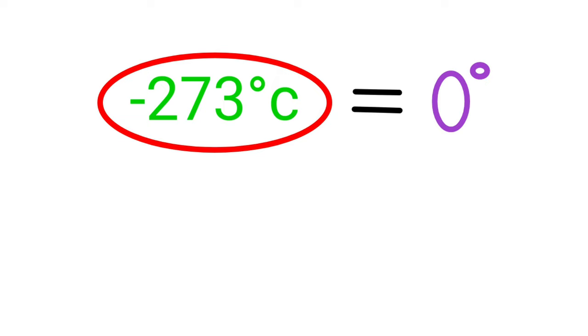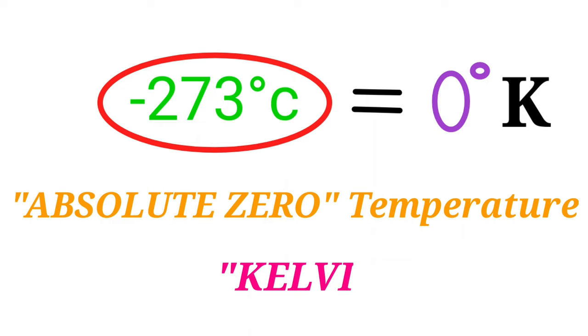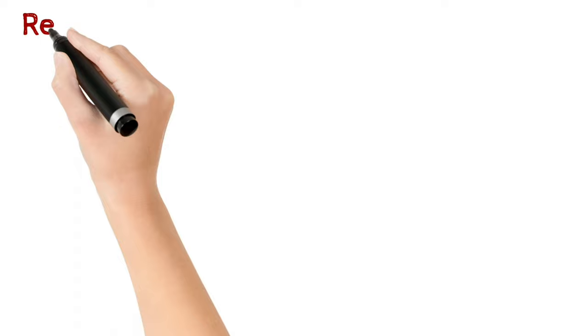He set this temperature as zero in his scale and termed it as absolute zero temperature. This temperature scale is known as Kelvin scale, where zero Kelvin equals minus 273 degrees Celsius.